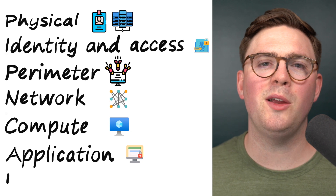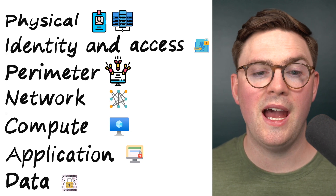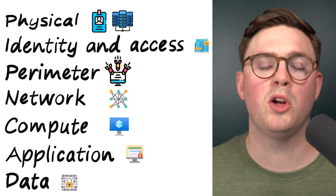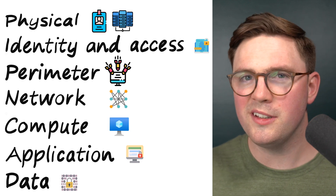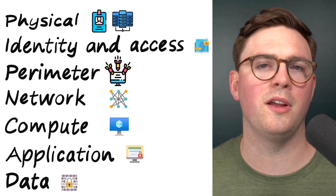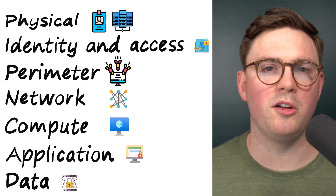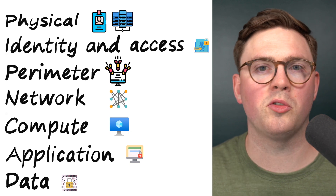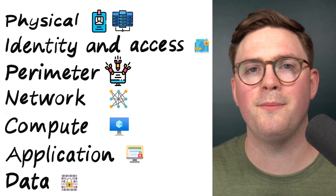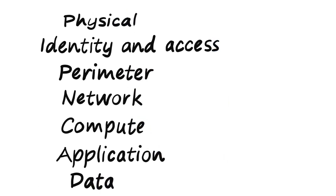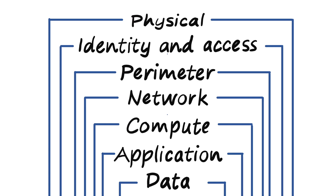And then finally we have data — how do you protect and manage all of your business and customer data. This could be things like encryption, how we encrypt data at rest or in transit. Those are some high-level examples of the different layers we can use within security to protect our environments and slow down the advance of attackers.